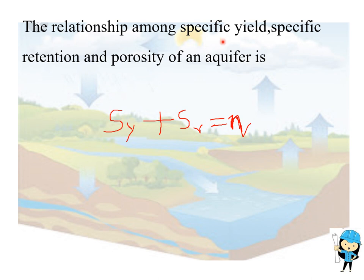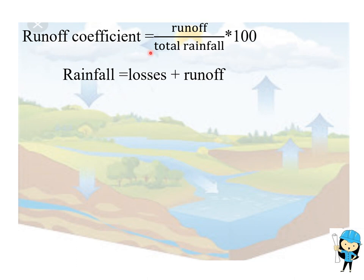The relationship among specific yield, specific retention, and porosity of an aquifer is: specific yield Sy plus specific retention Sr equals porosity n. Runoff coefficient is defined as the ratio of runoff to total rainfall times 100. Here, rainfall equals losses plus runoff.